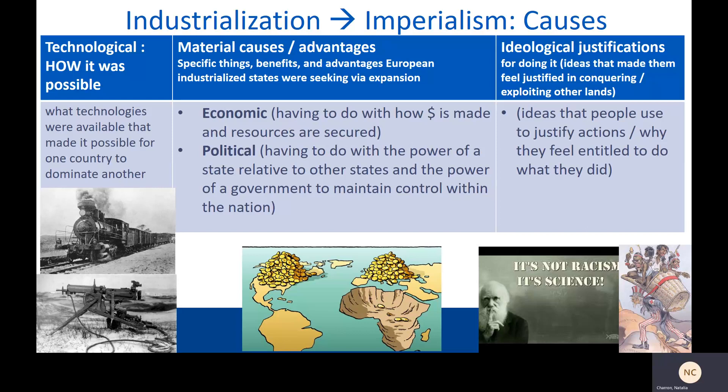Finally, we're going to look at ideological justifications for doing it — for conquering so much land. That refers to the ideas that made Europeans feel justified or entitled to conquer and exploit other lands. These are the ideas that make it seem okay, the ideas that they tend to advertise — you can think of them almost always as excuses after the fact. It's important to think about causes in these three categories because often you'll hear history presented in terms of equal weight, like Europeans wanted to go spread Christianity and also they wanted natural resources, with those ideas presented as equally motivating — when in fact, history rarely actually plays out that way.